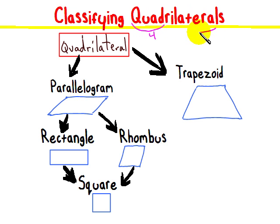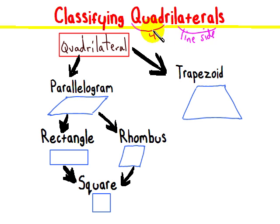And then lateral, like in American football, if you do a lateral pass off to the side, or it can be like lines or sides. So we basically have a four-sided figure. We're going to be talking about a four-sided polygon.